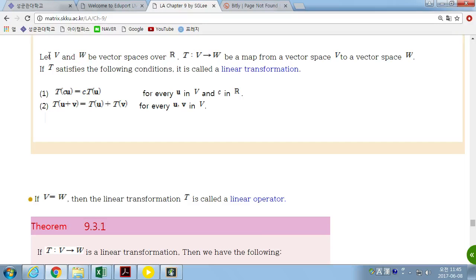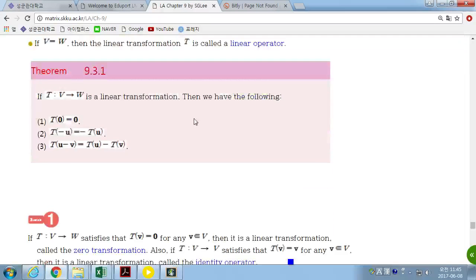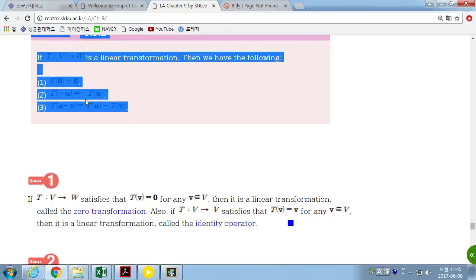Instead of R^n to R^m, we are using a general vector space V and W. So T satisfies, if map T satisfies these two properties, we call it a linear transformation for vector space V and W. This linear transformation satisfies the properties that you have seen. Exactly the same properties.